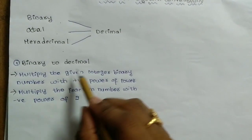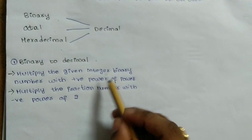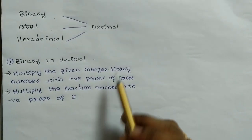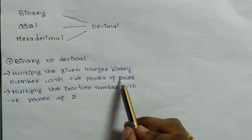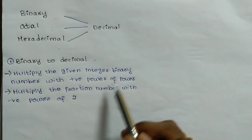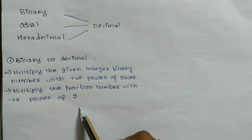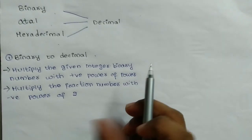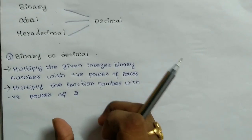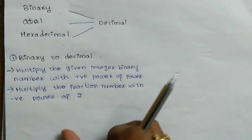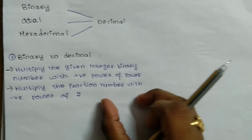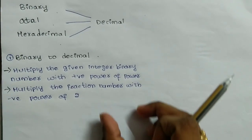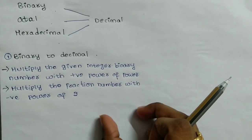The first one is binary to decimal. Here, multiply the given integer binary number with positive power of 2, and the fractional number with negative power of 2. The real part will be multiplied with positive power of 2, and the fractional part with negative power of 2.